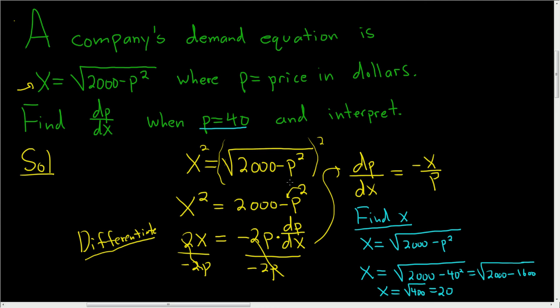So to find x, we wrote down the original demand equation, not this one, the original one. And we plugged in p equals 40 to solve for x.